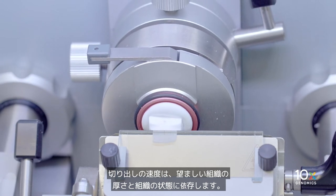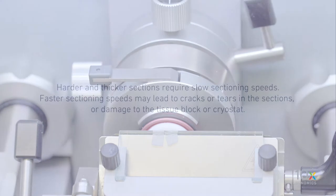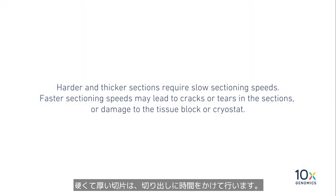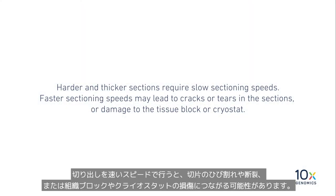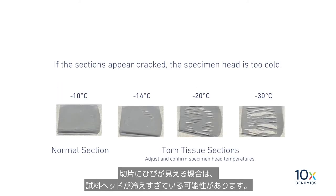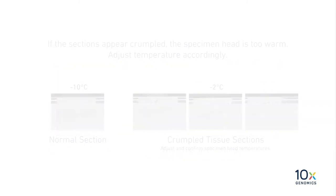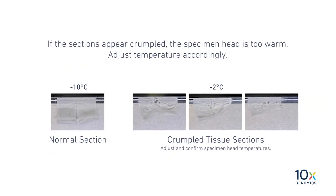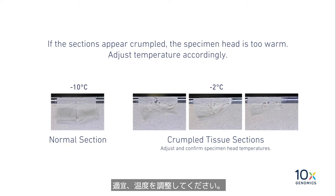Now we are ready to section the tissue. Sectioning speeds depend on the desired thickness of the sections and the condition of the tissues. Harder and thicker sections require slow sectioning speeds. Faster sectioning speeds may lead to cracks or tears in the sections or damage to the tissue block or cryostat. If the sections appear cracked, the specimen head is too cold. If the sections appear crumpled, the specimen head is too warm. Adjust temperature accordingly.